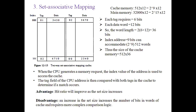The number of tag-data items stored under one index in cache is known as the set. The advantage of set associative mapping is that hit ratio improves as the set size increases — more words can be stored per index. The disadvantage is that storing more words per index requires more bits and more complex comparison logic.